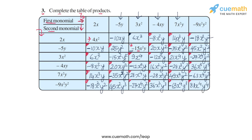I don't know if you were able to spot the pattern: the terms along the diagonal are 4x², 25y², 9x⁴, 16x²y², 49x⁴y², and 81x⁴y⁴. These terms occurred only once in the table, but all other terms occurred twice — once above the diagonal and once below. So this was an interesting pattern. With this, we have completed question number 3.